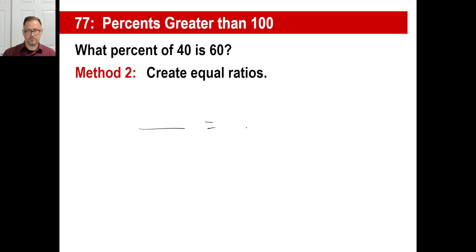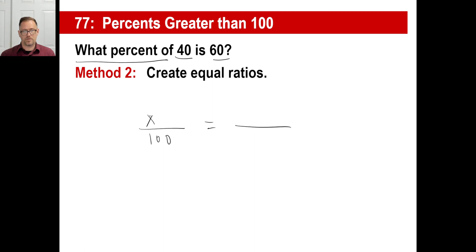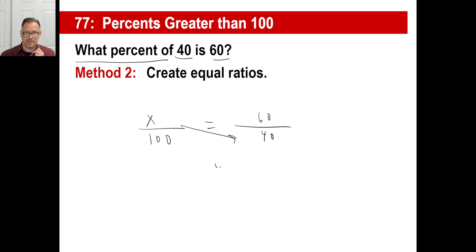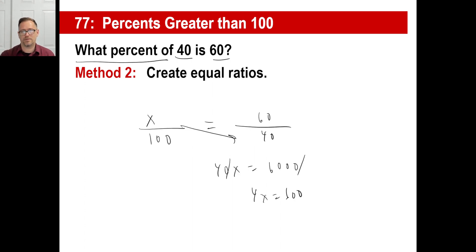Let's do it the other way — equal ratios, fraction equals fraction. We have a 40 and a 60. 'What percent' is x over 100. Now, is 60 more or less than 100% of 40? Well, 40 is 100% of 40, and 60 is more than that, so it's bigger. The bigger number — 60 — goes on top. So 60/40 = x/100. Cross multiply: 40x = 6000. Chop zeros: 4x = 600, so x = 150%. Same answer.